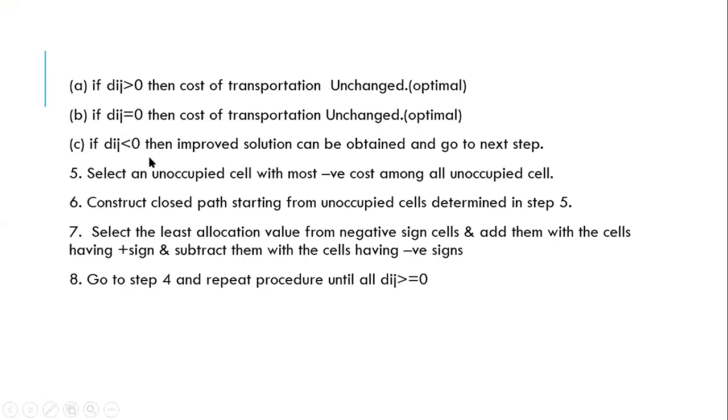If it is less than 0, a negative value, which means putting something in the negative value cell will actually reduce the transportation cost. And hence we go to the next step.